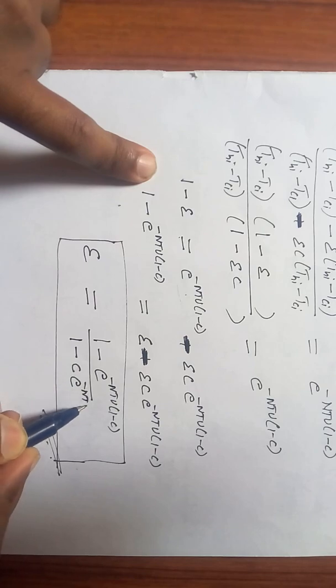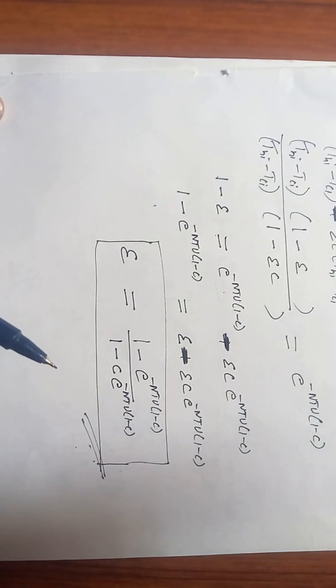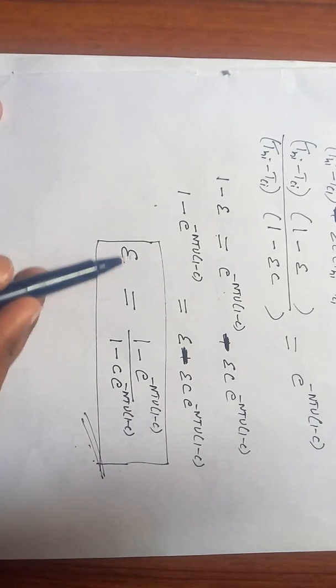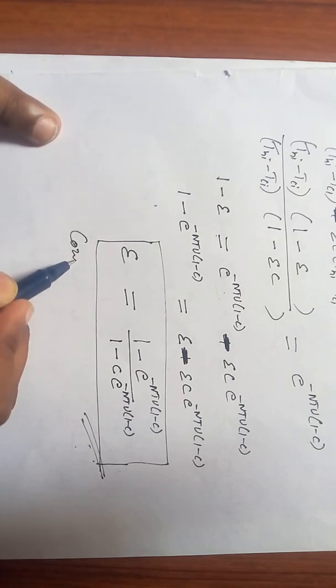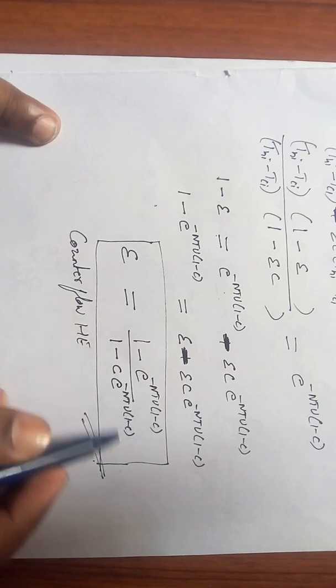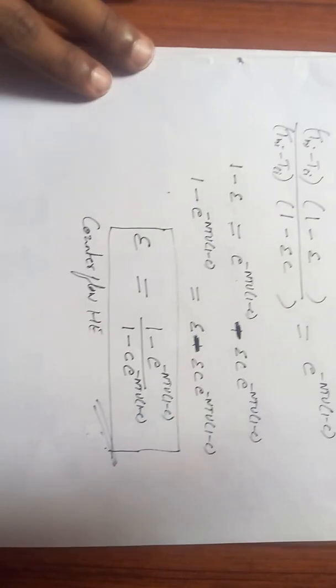Epsilon equals (1 minus e to the power minus NTU times (1 minus C)) divided by (1 minus C times e to the power minus NTU times (1 minus C)). So this is your final expression for effectiveness for counter flow heat exchanger NTU derivation. There is almost all the analytical part of heat exchanger. I am ending up all the videos of heat exchangers.